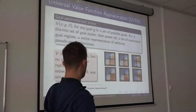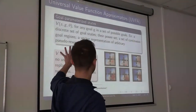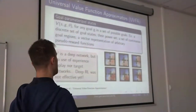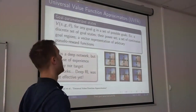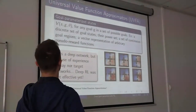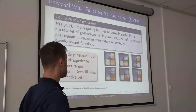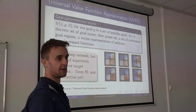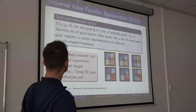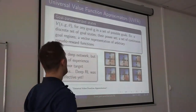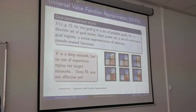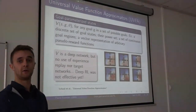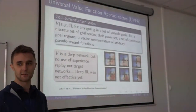The idea of UVFA is very simple. In standard RL, the value function is a function of the state, or the state and action for the Q function. In UVFAs, you add the goal to the state — you concatenate the initial state and the goal to form an augmented, goal-parameterized state. You can choose goals from a discrete set, goal regions, or more interestingly, as arbitrary pseudo-reward functions, which is closer to what IMGEP does.